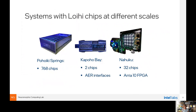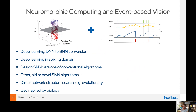At Intel we have different form factors for trying out Loihi. The smallest is the Kapoho Bay USB stick device, containing two Loihi chips — 200,000 spiking neurons — with an address-event representation interface that connects directly to a dynamic vision sensor. The Nahuku board has 32 chips integrated with an Arria 10 FPGA for heavy parallel pre- or post-processing. Finally, Pohoiki Springs is our largest system, with 768 chips and one million neurons.